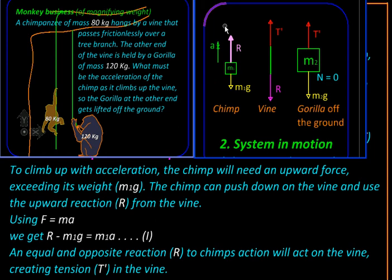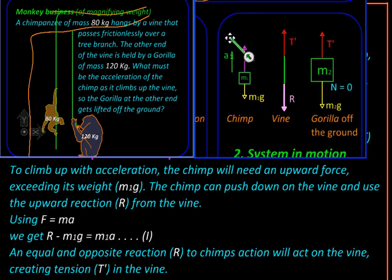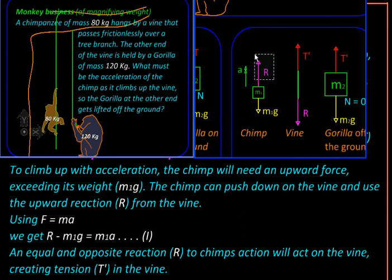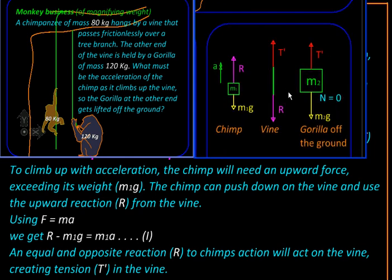This reaction R from the vine on the chimp is because of the action R from the chimp on the vine. You can notice this action-reaction pair are acting on two different bodies and they are equal and opposite according to Newton's third law.